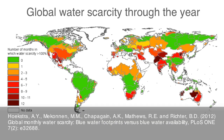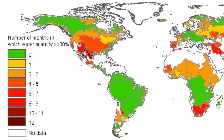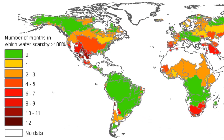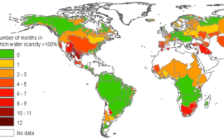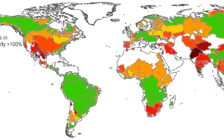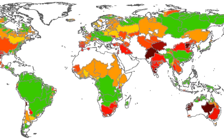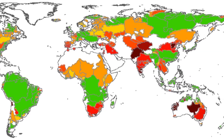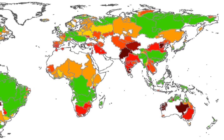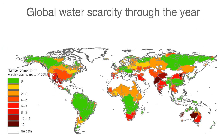Freshwater is the basis of all life. This image shows that there are regions throughout the world where the amount of water needed to sustain human life and dilute pollutants to acceptable levels exceeds what is available through rivers and groundwater. That is, there's a scarcity of freshwater in different regions of the world.